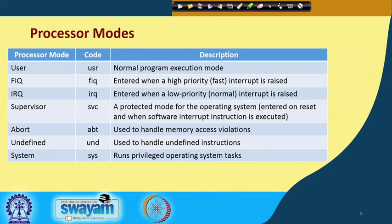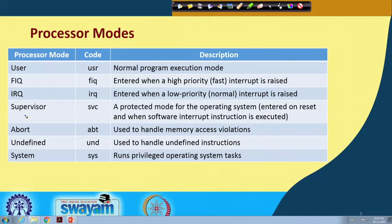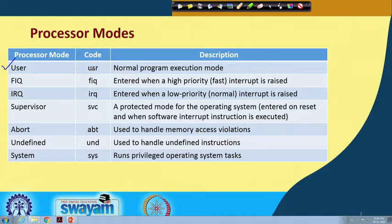Let us start with the processor modes. In the ARM processor during execution, at a given time the processor can be in one of 7 modes, and this table summarizes the 7 processor modes. The user mode is the normal mode during execution of a program. When a program is executed, normally we say that the system is in user mode. This user mode, the acronym is USR, is the normal program execution mode.